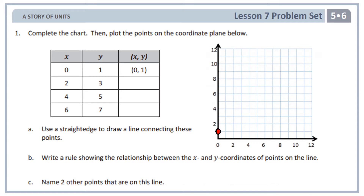Let's do the next one: x of 2, y of 3, which gives us 2 comma 3. I start at 0 comma 0, go over 2 units on the x-axis, and go up 3 units on the y-axis, and that gives me the point 2 comma 3. I'd like you to go ahead and plot 4 comma 5 and 6 comma 7 onto this coordinate plane, and I will go over them in just a bit.